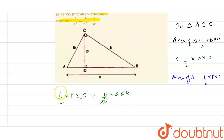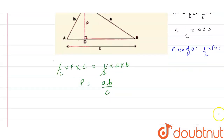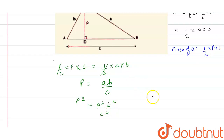The halves cancel out, giving p equals ab divided by c. Now by squaring both sides, we get p² equals a²b² divided by c².